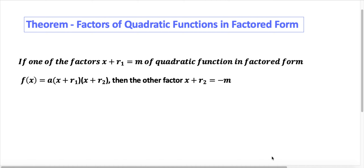Quadratic functions in factored form: if one of the factors, x plus r1, is equal to m of a quadratic function in factored form f(x) = a times (x plus r1) times (x plus r2), then the other factor x plus r2 is equal to minus m.